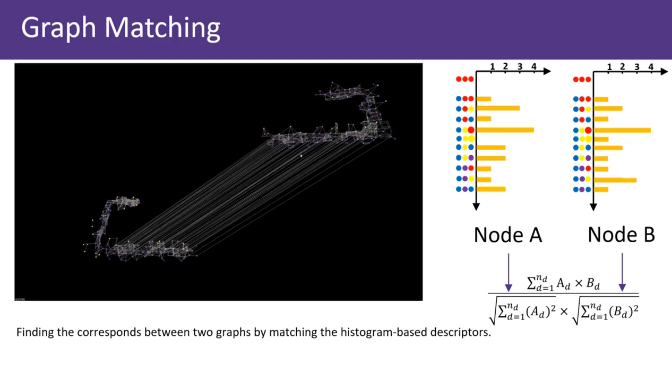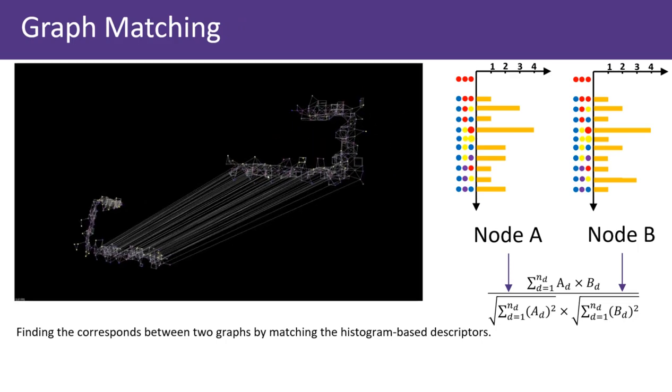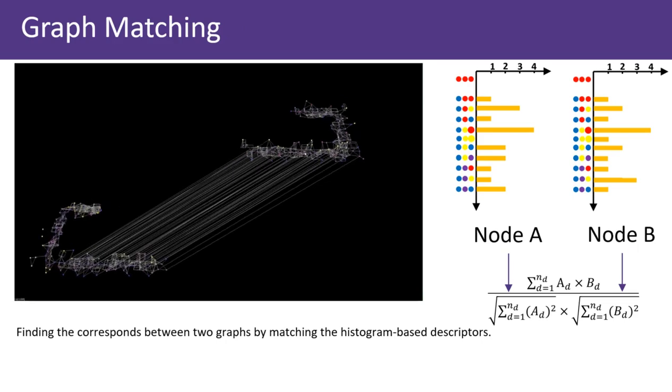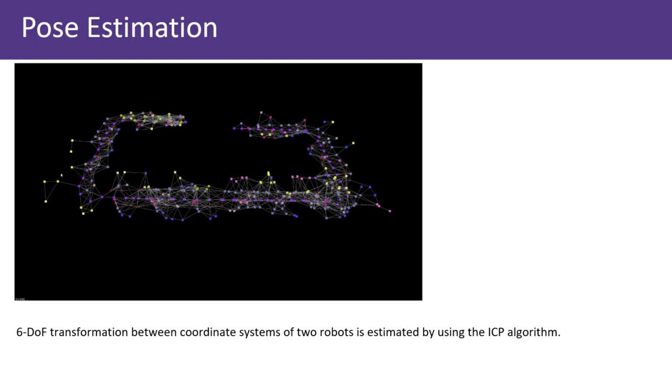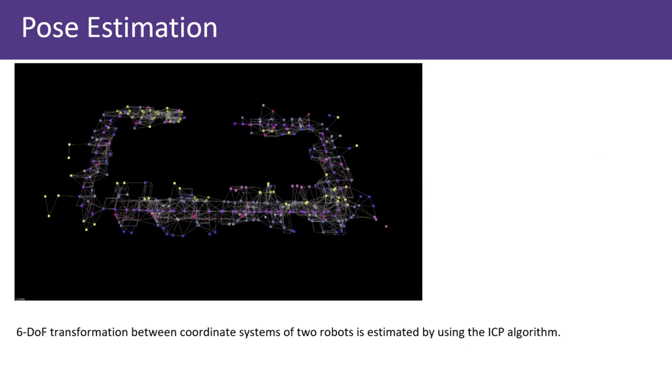Similar to image matching, the descriptors of nodes are compared across the graphs by computing the similarity score. The similarity score is obtained by taking the normalized dot product between two descriptors. The outlier matching is then rejected by the RANSAC method.